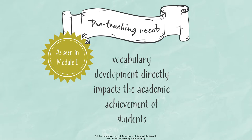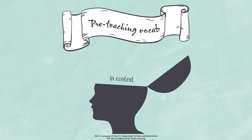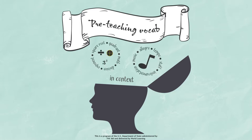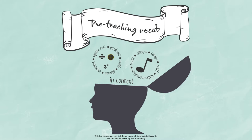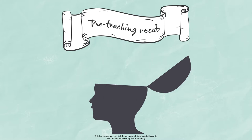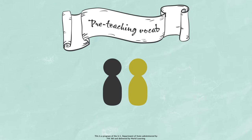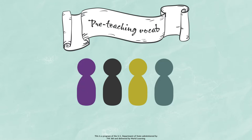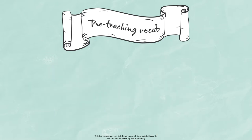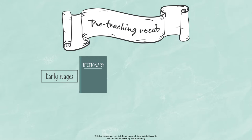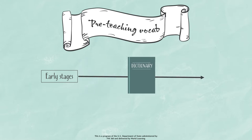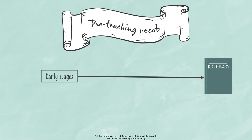Pre-teaching Vocabulary: As discussed in module 1, vocabulary development directly impacts the academic achievement of students. Vocabulary words should be introduced in context while associating them with things that students already know and find interesting. Since vocabulary is a critical component of a CBI classroom, it should be taught outright. Teachers should also allot time for discussion of those words in pairs, small groups, or with the whole class. Instead of using dictionaries at early stages of a lesson, dictionaries should be used later after discussion, to compare the definitions that students have already discovered and come up with.